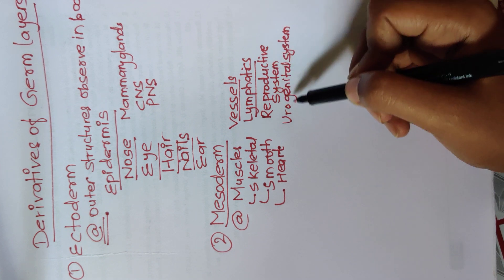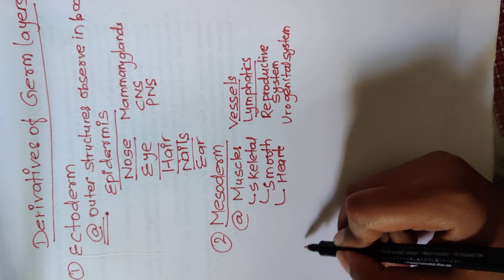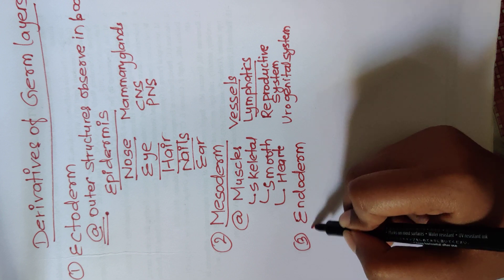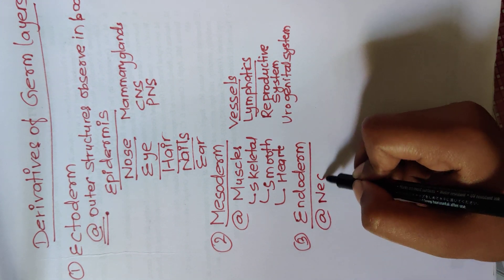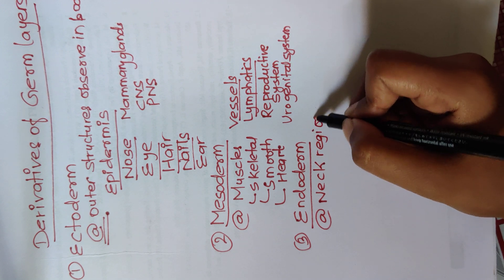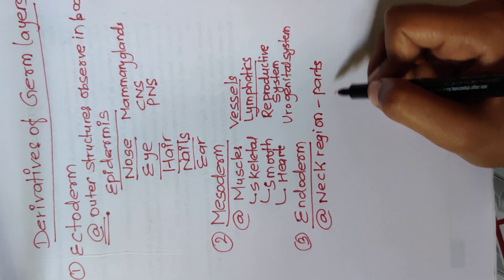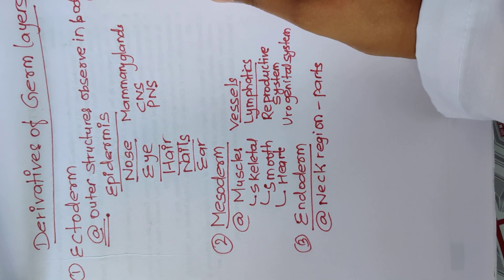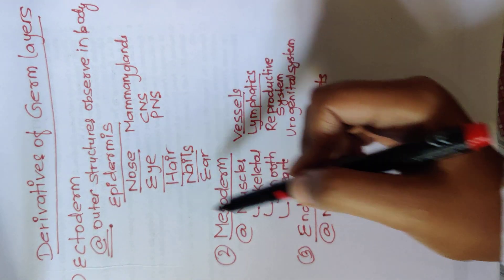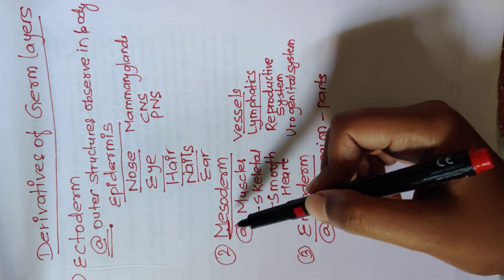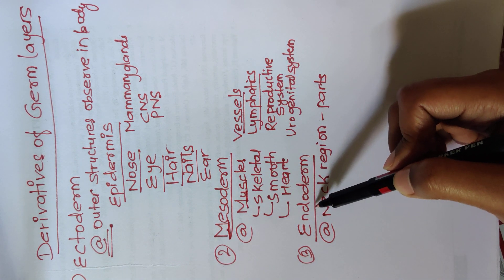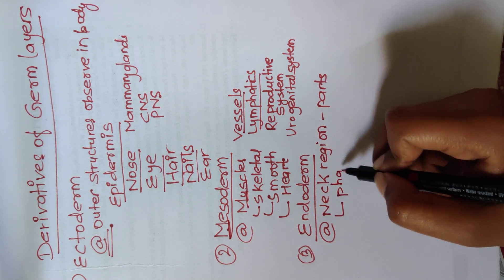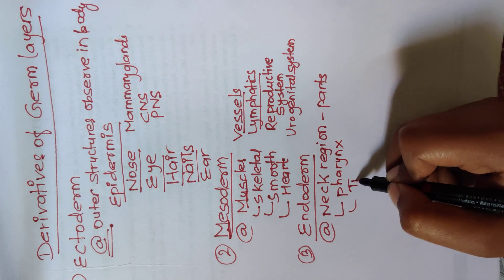Now for the last one — endoderm. For endoderm, remember the mnemonic: neck region parts. For ectoderm it was outer structures observed in the body, for mesoderm it starts with M and includes muscles, and for endoderm you observe the neck region parts, which include first pharynx, then trachea.